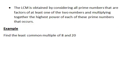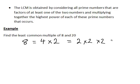So for example, how would we find the least common multiple of eight and twenty? Well, let's start off by factorising each of these numbers. Eight is an even number, therefore it is divisible by two, so we write that as four times two. Four is also divisible by two, so that becomes two times two times two. Therefore, we could also write this as two to the power of three.